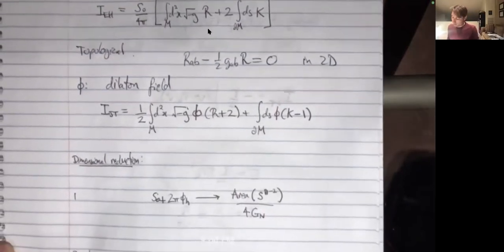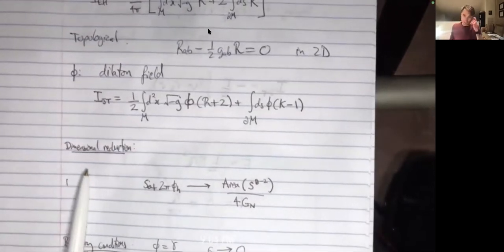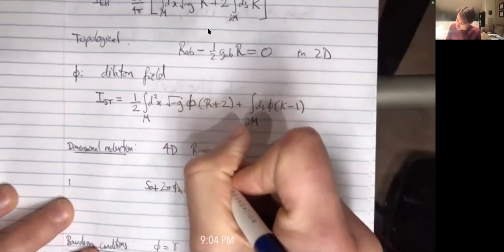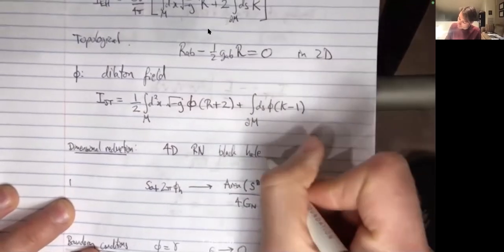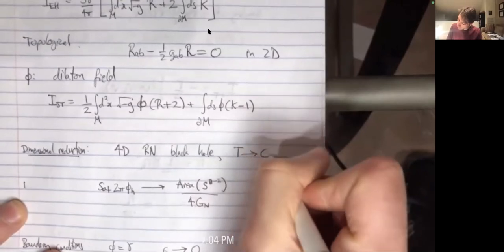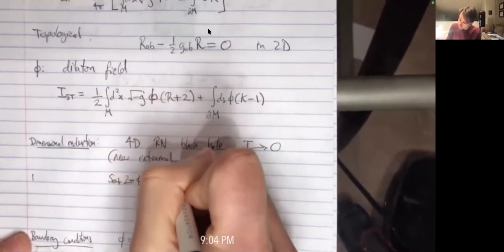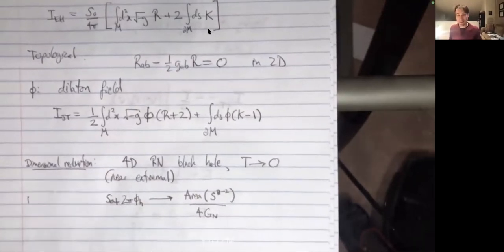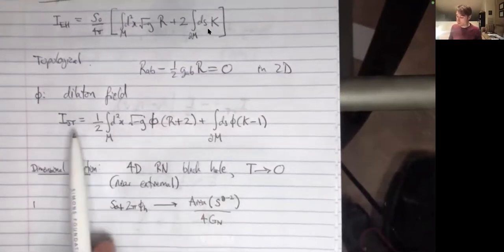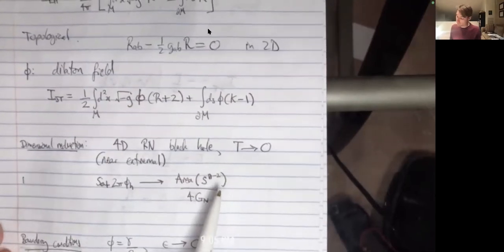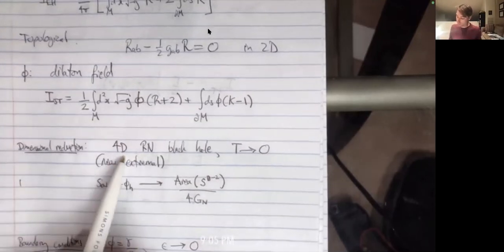The dilaton action is well motivated — it comes from dimensional reduction. For example, if you have a Reissner-Nordström black hole and take the temperature to be very small, looking at the low-temperature near-extremal limit, you end up with JT gravity describing the dynamics. More generally, in higher dimensions there's a transverse (d minus two)-sphere, and the area of this transverse sphere is encoded in the dilaton.